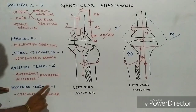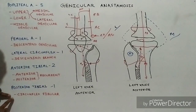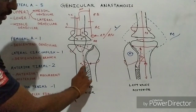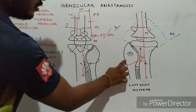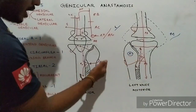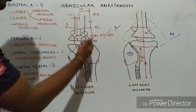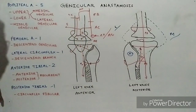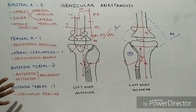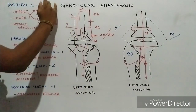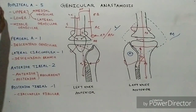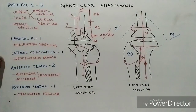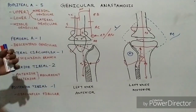The two branches from the anterior tibial artery are the posterior recurrent and anterior recurrent branches. Finally, the branch from the posterior tibial artery is the circumflex fibular branch, which goes around the fibula and comes into the anterior aspect to join the anastomosis. In conclusion, altogether ten branches contribute from five parent arteries to form this anastomosis.